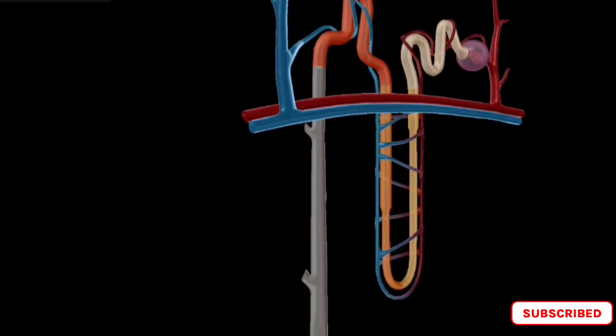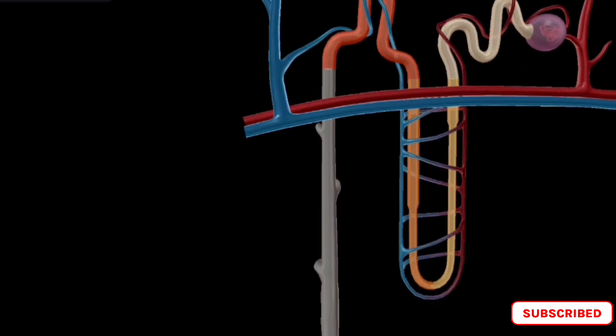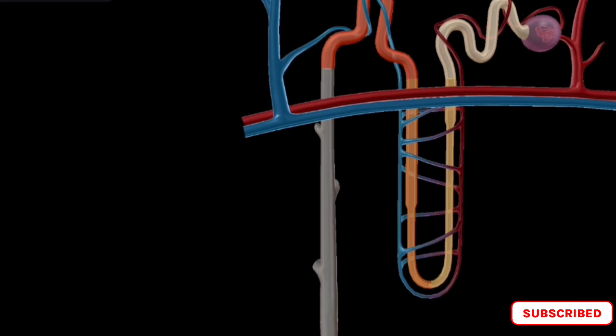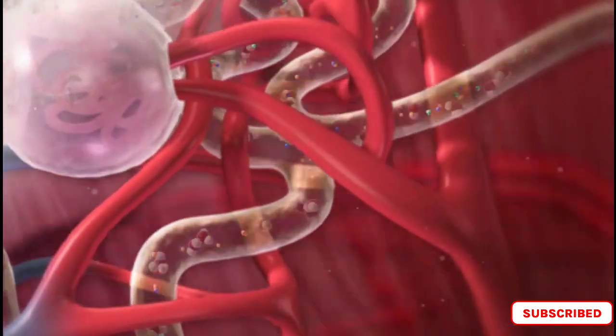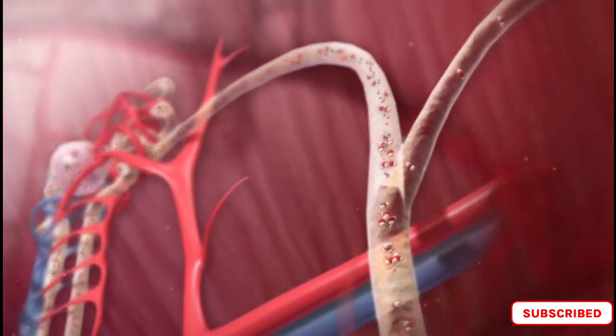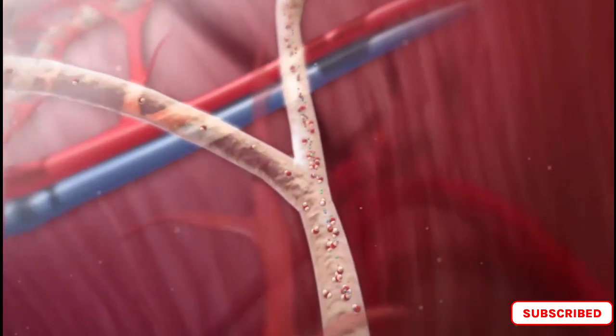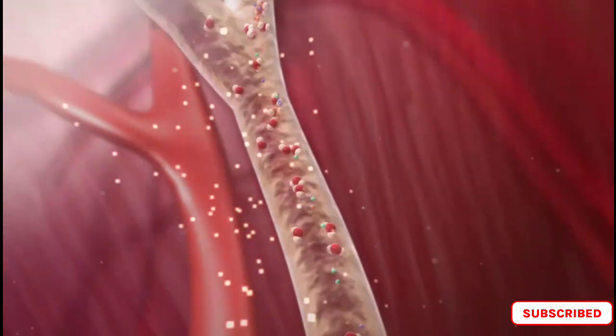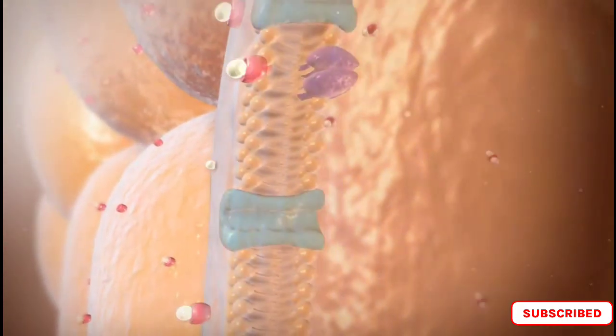The renal tubules are lined with specialized epithelial cells responsible for the reabsorption and secretion of various substances. The proximal convoluted tubule is lined with cuboidal epithelial cells, while the loop of Henle is lined with thin squamous epithelial cells. The distal convoluted tubule is lined with cuboidal epithelial cells specialized for ion reabsorption and secretion. The glomerulus filters blood and produces a fluid called filtrate, which is processed by the renal tubules to form urine. The juxtaglomerular cells are specialized cells located near the glomerulus that help regulate blood pressure and kidney function. They produce a hormone called renin, which activates the renin-angiotensin-aldosterone system (RAAS), a complex system that helps regulate blood pressure and electrolyte balance.